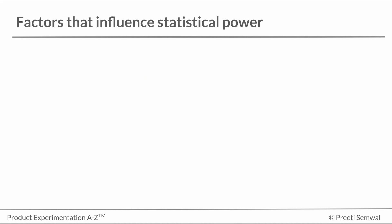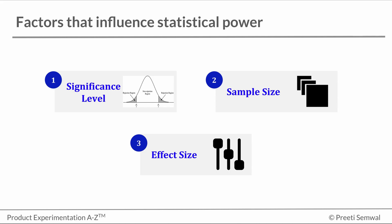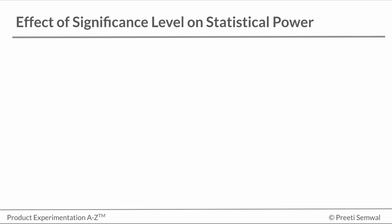There are three things that statistical power depends on: significance level, sample size, and effect size. So let's go through each of them and see what the impact is. Let's start with the significance level.